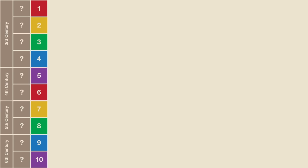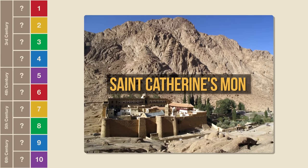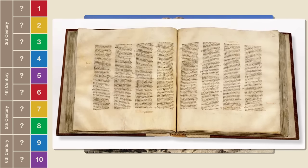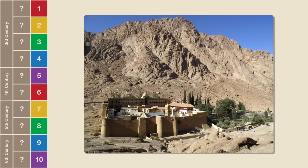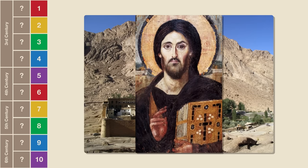Let's now look at some of the earliest depictions of Jesus in art. I'm going to start with an image that can be found here. This is St. Catherine's Monastery, located in Egypt near the mountain that is traditionally considered to be Mount Sinai. This is also the monastery where the Codex Sinaiticus was found, which I discussed in my video about the oldest Bible manuscripts. It also houses this image, considered to be one of the oldest Byzantine icons still in existence, dating to around 550 CE.